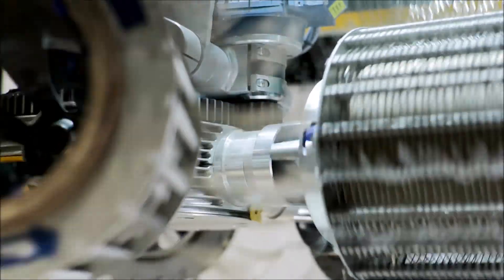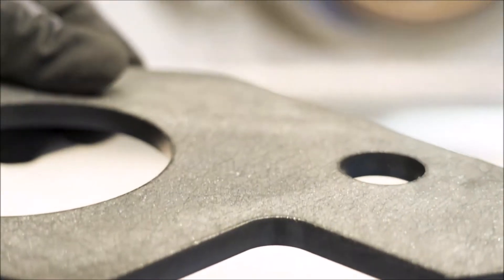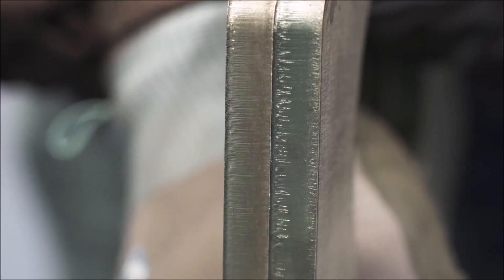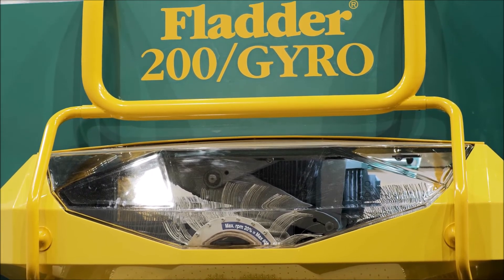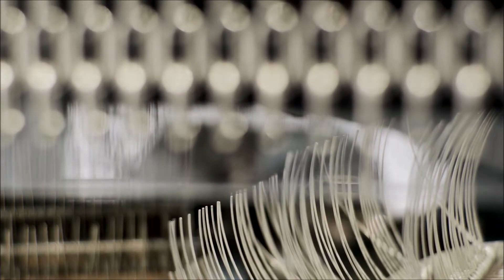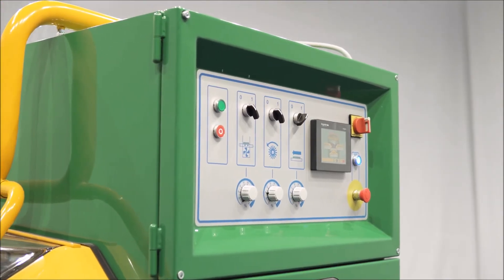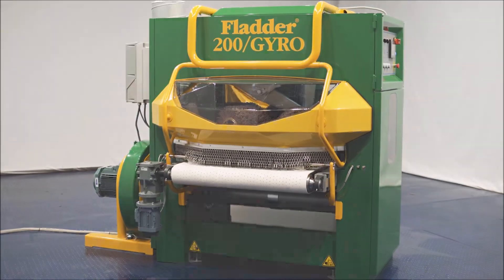All of these features make the Flada 200 Gyro model a perfect solution for efficient deburring or end finishing processing such as non-directional surface finish, convex or concave shapes, improved bonding and adhesion of paint or glue, and matting.